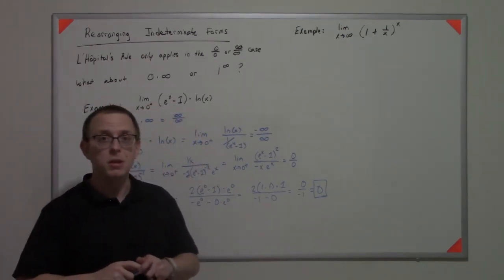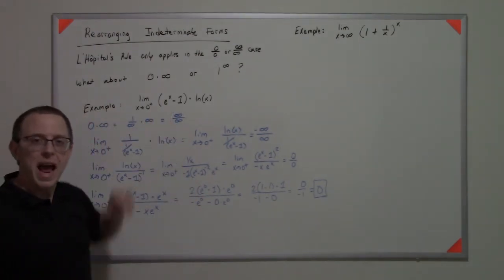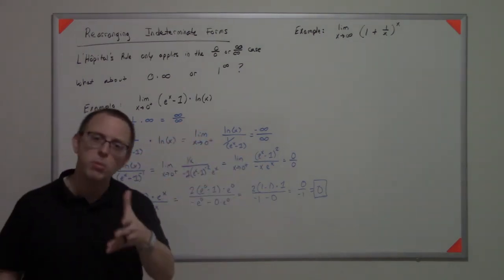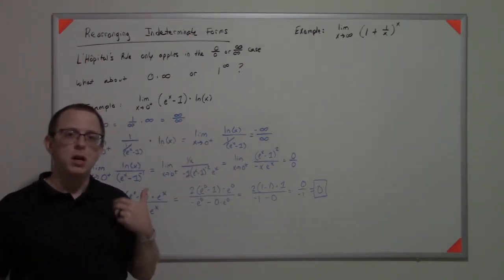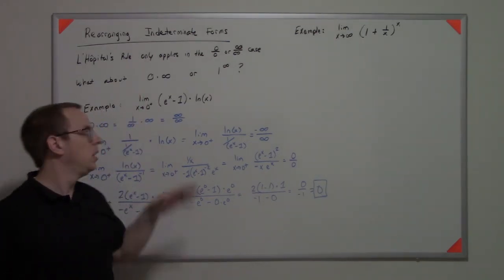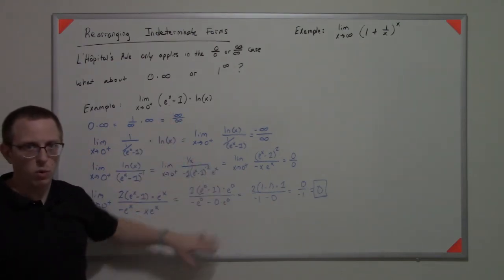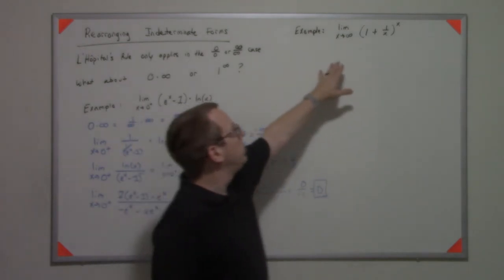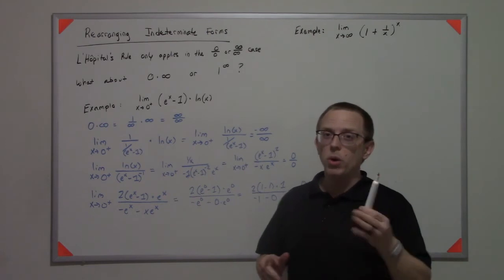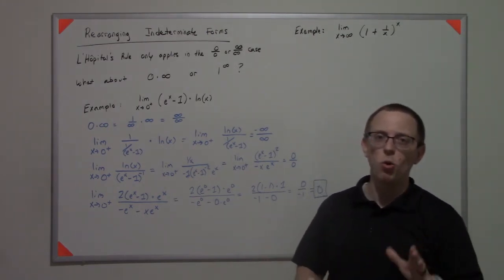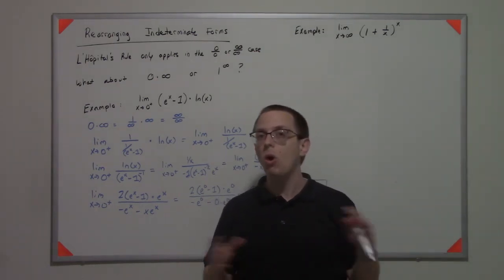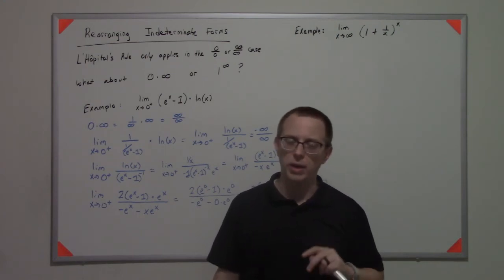That's a pretty advanced one — probably nastier than strictly necessary — but I wanted to show one that was not quite straightforward. I had to use several tricks along the way. A lot of times the 0 times infinity cases are easy ones; this one you actually have to work for. This next one will be pretty clean, but we're going to have to use a different technique. In the 1 to the infinity case, you're commonly going to have to use the technique I'm about to describe.